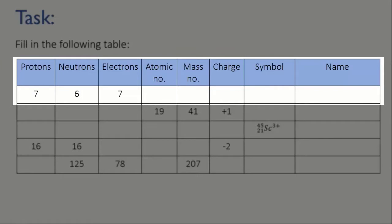So, we need to do this by deduction. We've got seven protons. We know that the atomic number is the same as that, so that's going to be number seven. The mass number is the protons plus the neutrons, that's seven plus six, which is 13.